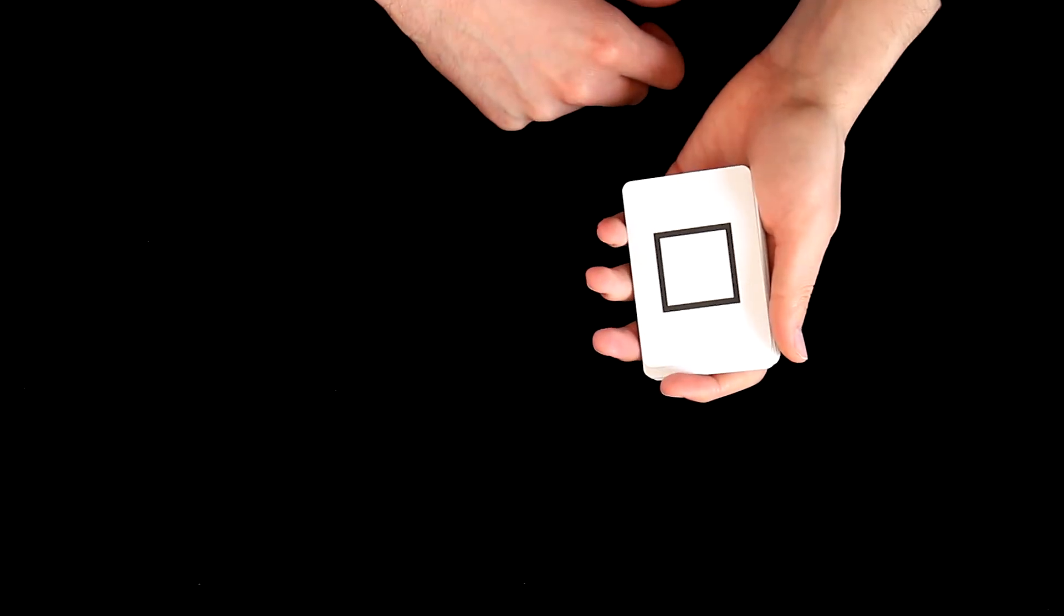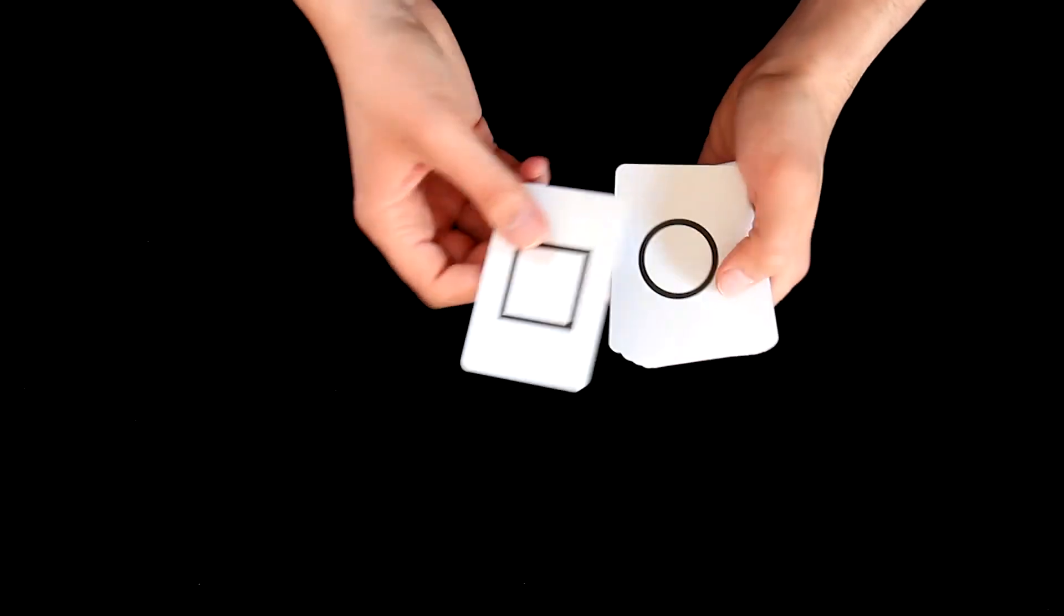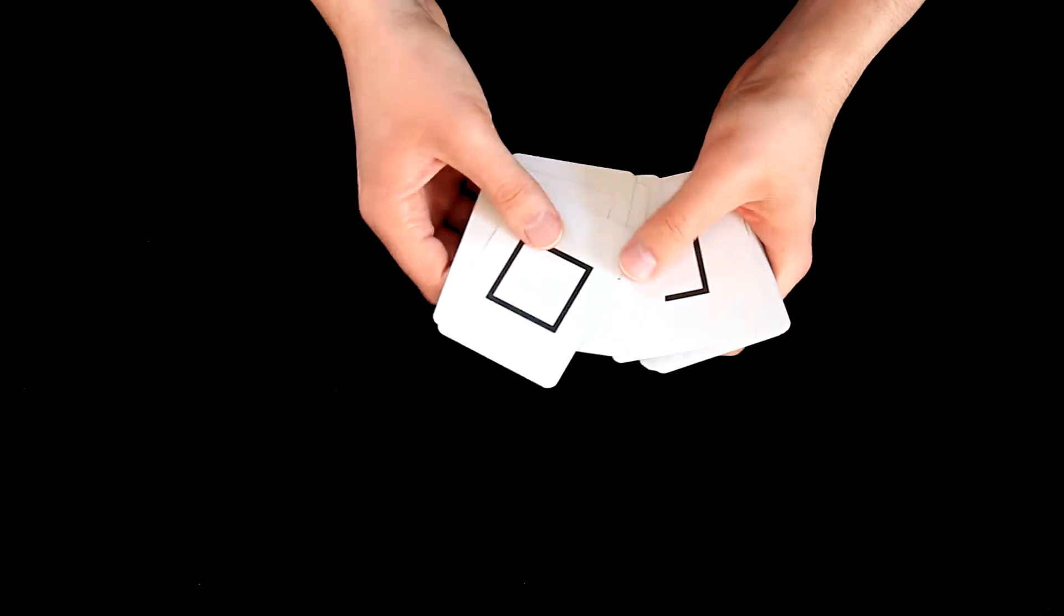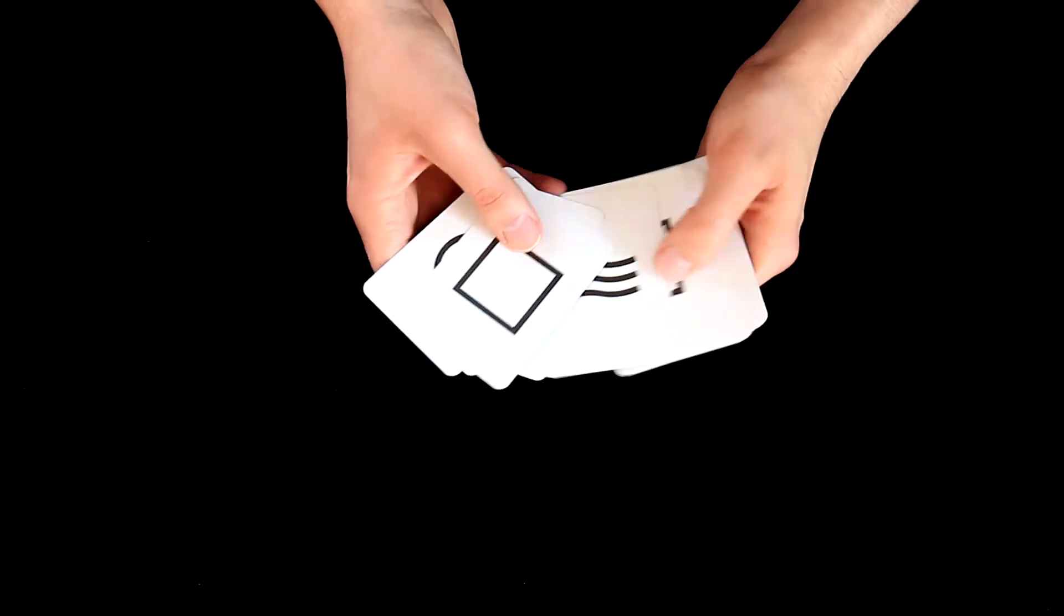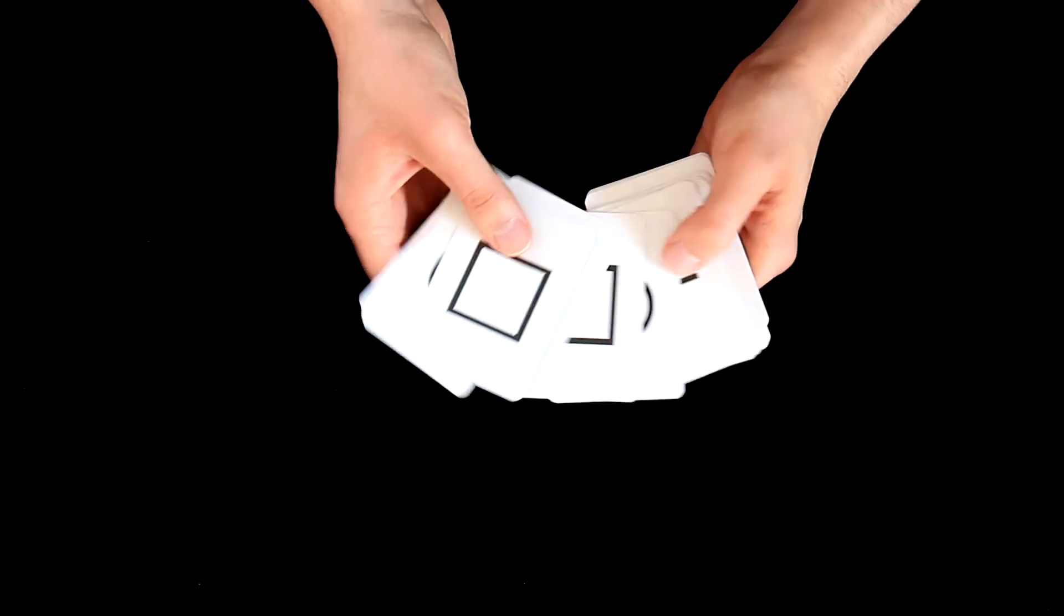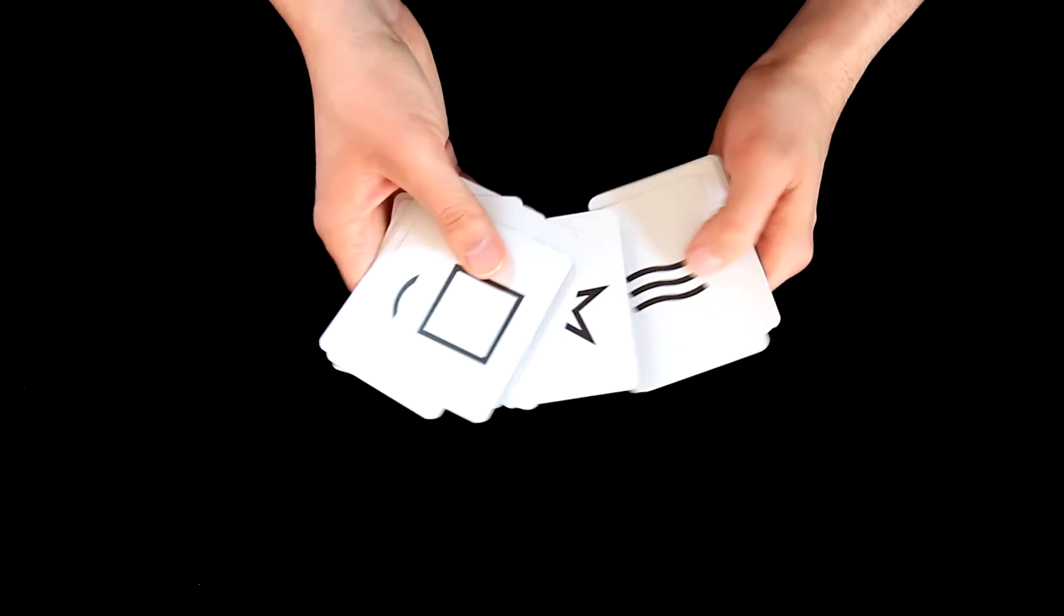This trick is really easy, it is self-working, it requires an ESP deck. So it means we have standard 5 ESP symbols and the order is then repeating throughout the entire packet.